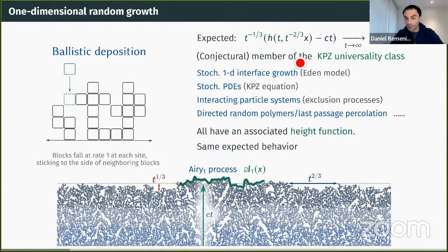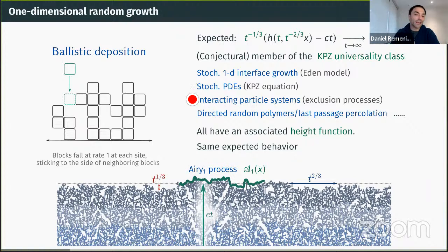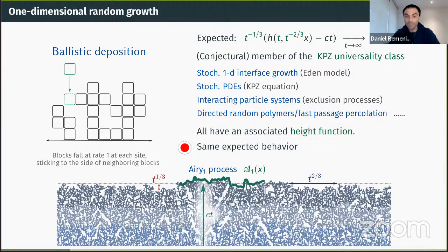Ballistic deposition is a conjectural member of the KPZ universality class—a broad class including stochastic one-dimensional interface growth like the Eden model, stochastic PDEs like the KPZ equation, interacting particle systems like ASEP, and directed random polymers/last passage percolation. All of them have an associated height function and are expected to have the same behavior. For ballistic deposition, it's conjectured but not proved; what's known from results by Timo Seppäläinen is merely that a linear growth speed exists.